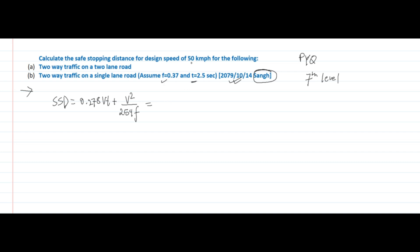0.278 into V is 50 into T is 2.5, plus V square is 50 square divided by 254 into F is 0.37. Let's calculate this: 0.278 into 50 into 2.5, plus 50 square divided by 254 into 0.37.